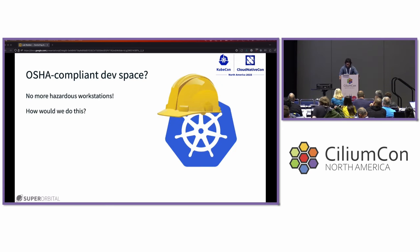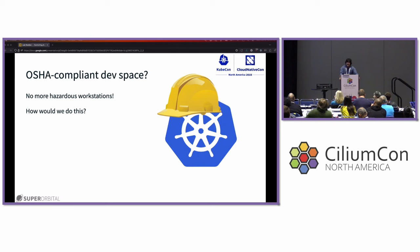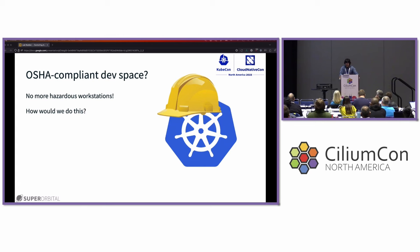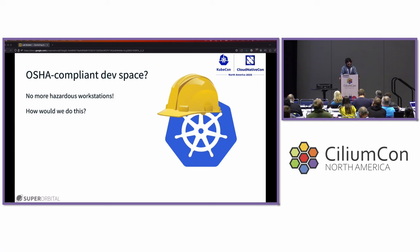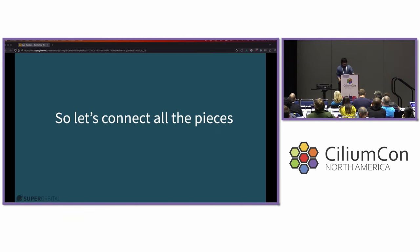So let's create an OSHA-compliant development space — no more hazardous workstations. We like to keep workstations open for ingress purposes since students already deal with VPNs and we don't want to add more layers. But we do want to limit egress. We're going to use layer 7 policies. For demonstration purposes, we'll focus on access to GitHub.com, and specifically we want our students to be accessing only the Superorbital repos from their workstations.